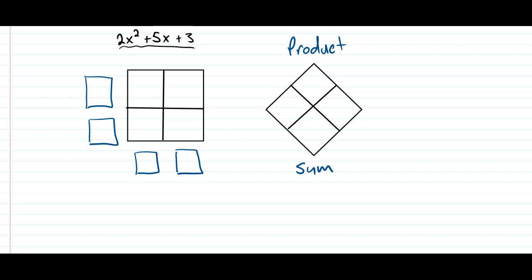So I'm first going to get the 2x squared, put it down here, and then the plus 3 put here. Next thing down here I'm going to use the diamond. You see the 5x?